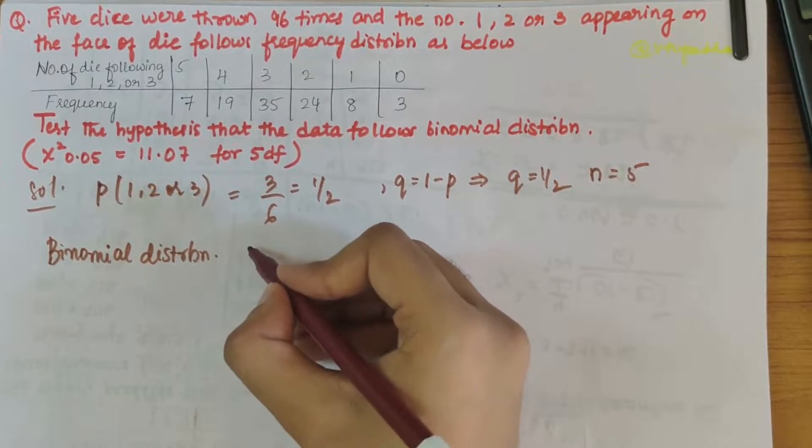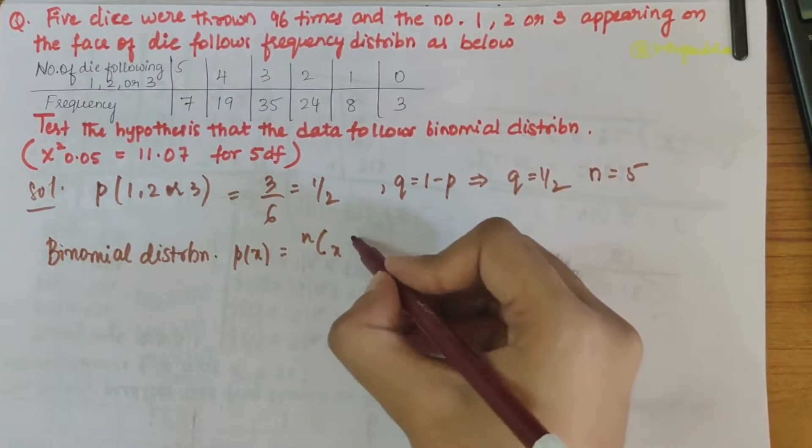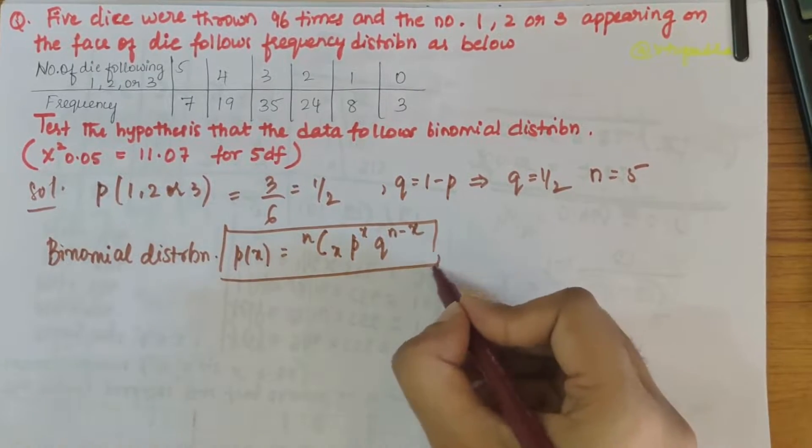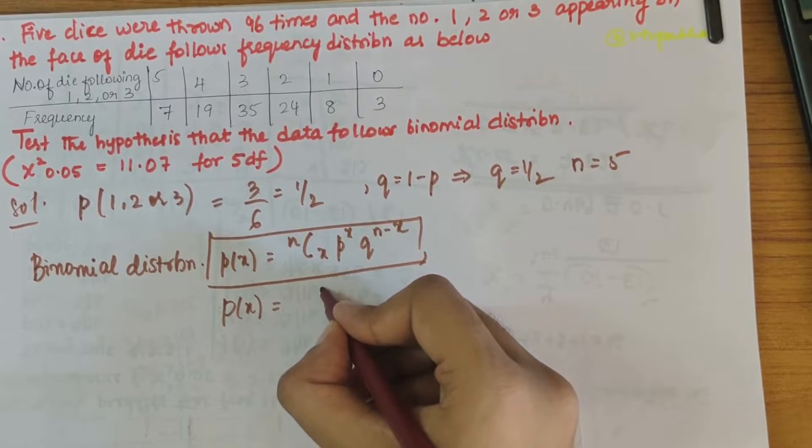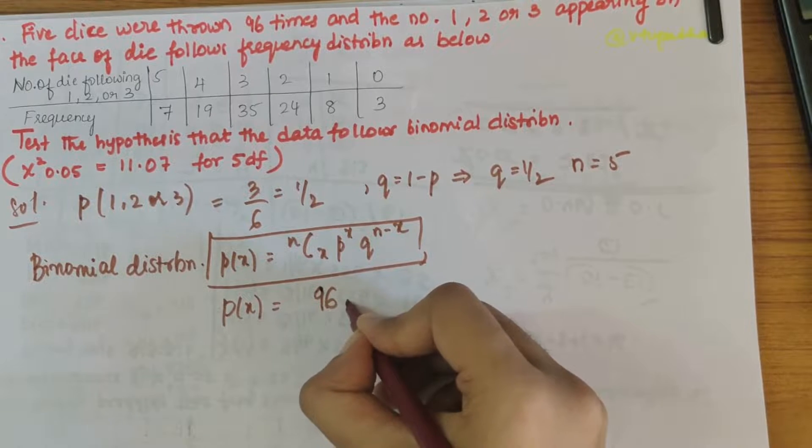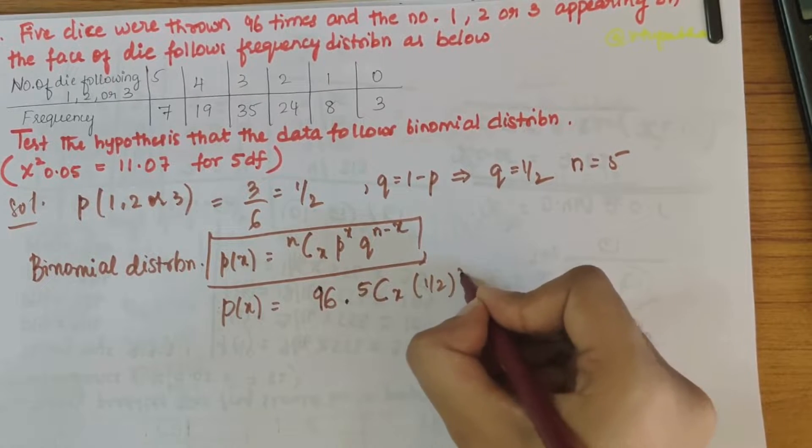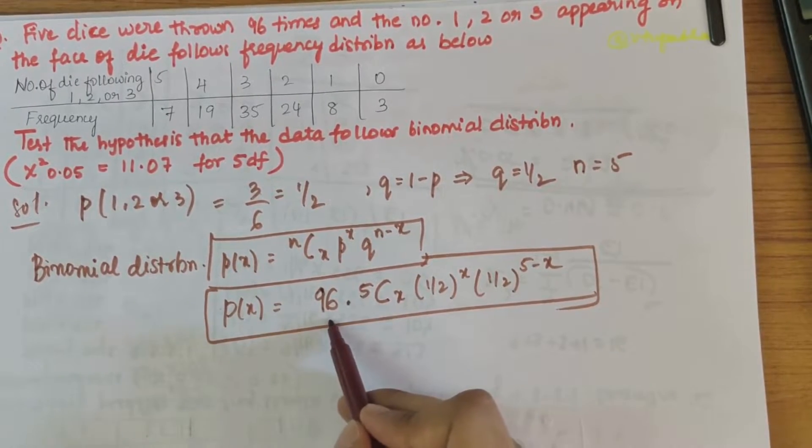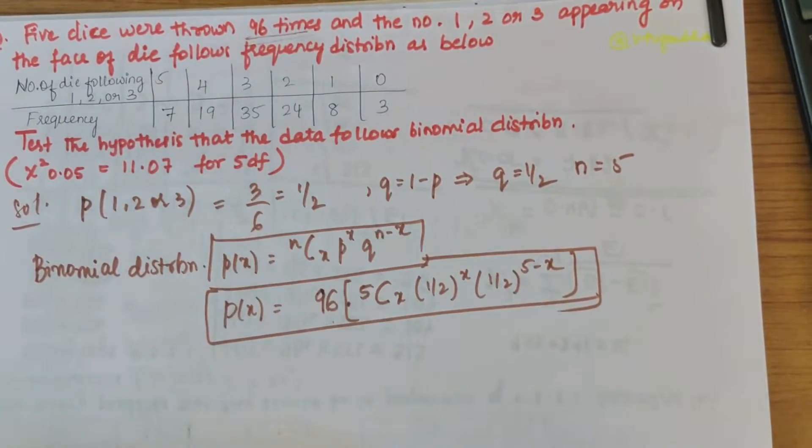Next we have to calculate the binomial distribution. The formula is p(x) equals n choose x times p to the x times q to the n minus x. Substituting the values, we can write it as p(x) equals 96 times 5 choose x times 1 by 2 to the x times 1 by 2 to the 5 minus x. We've multiplied it with 96 times because the five dice were thrown 96 times.